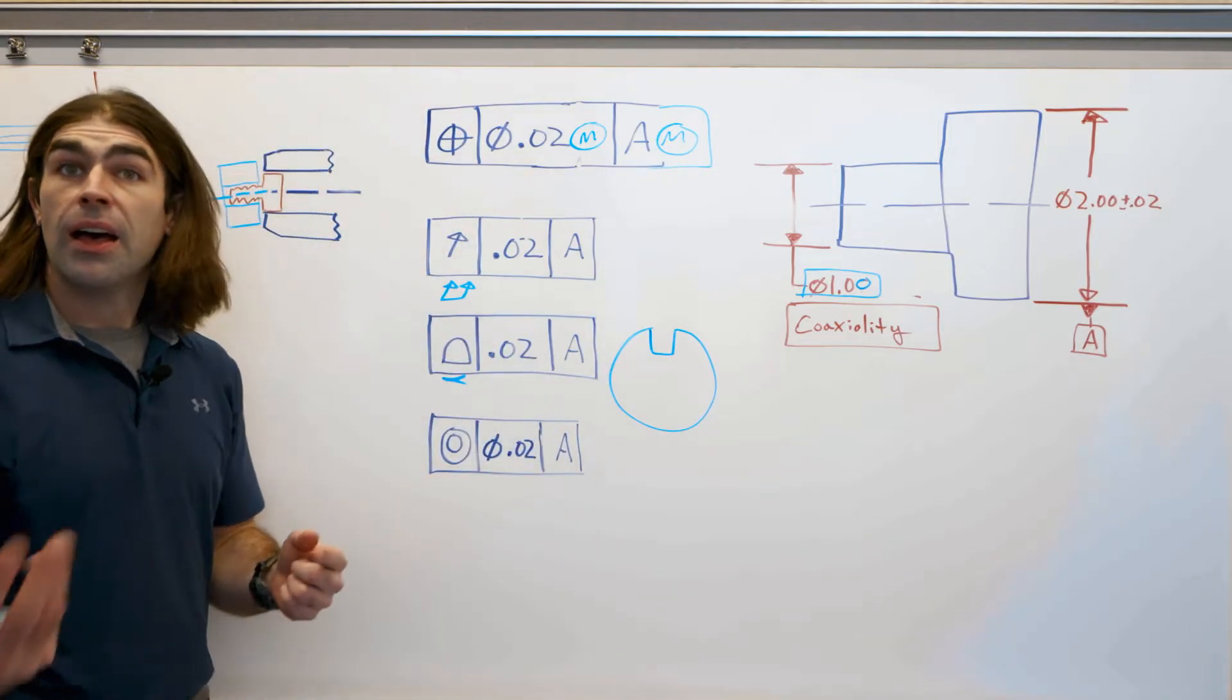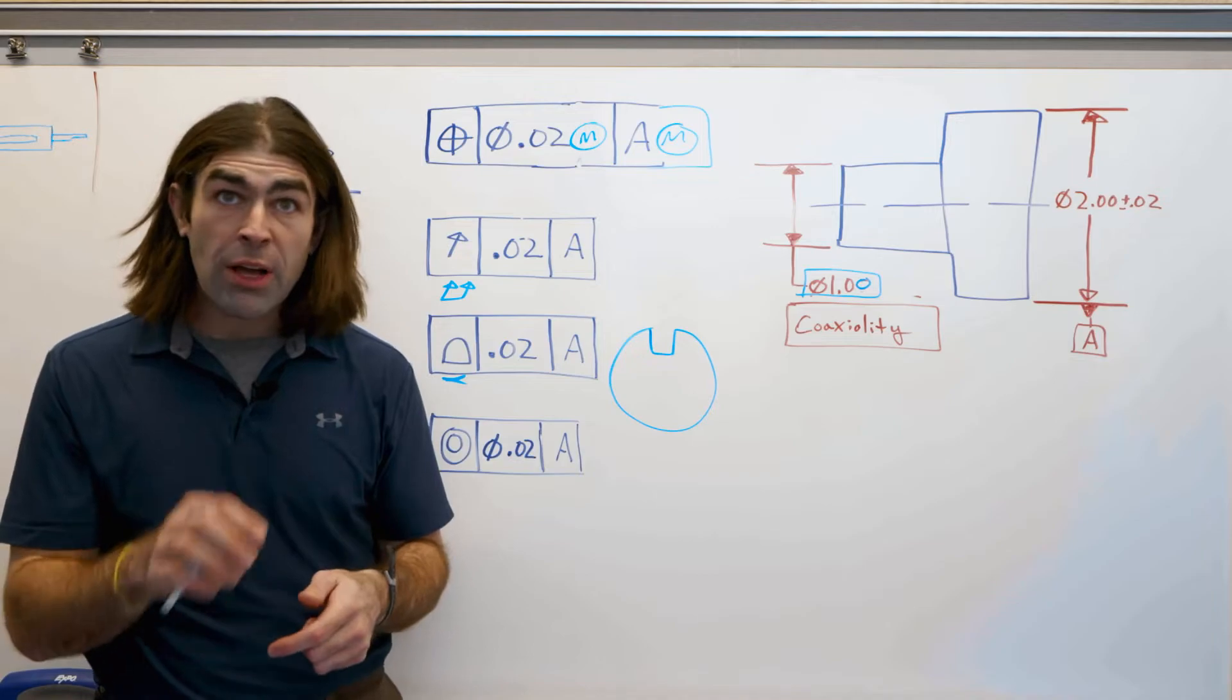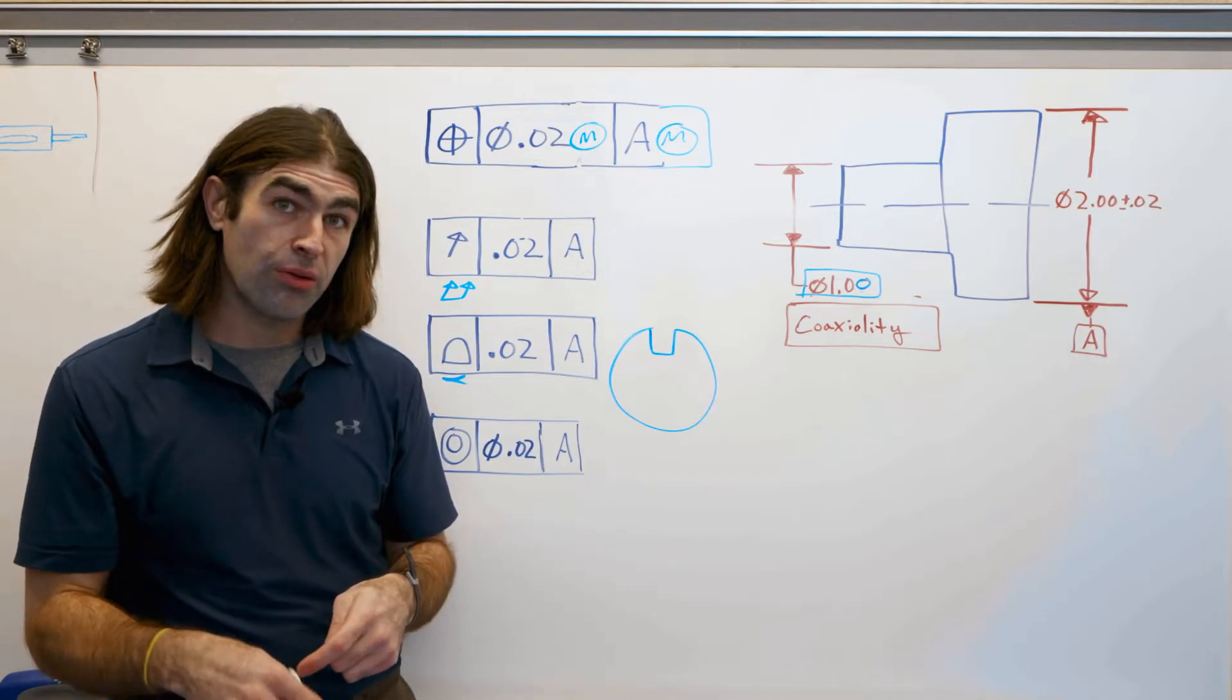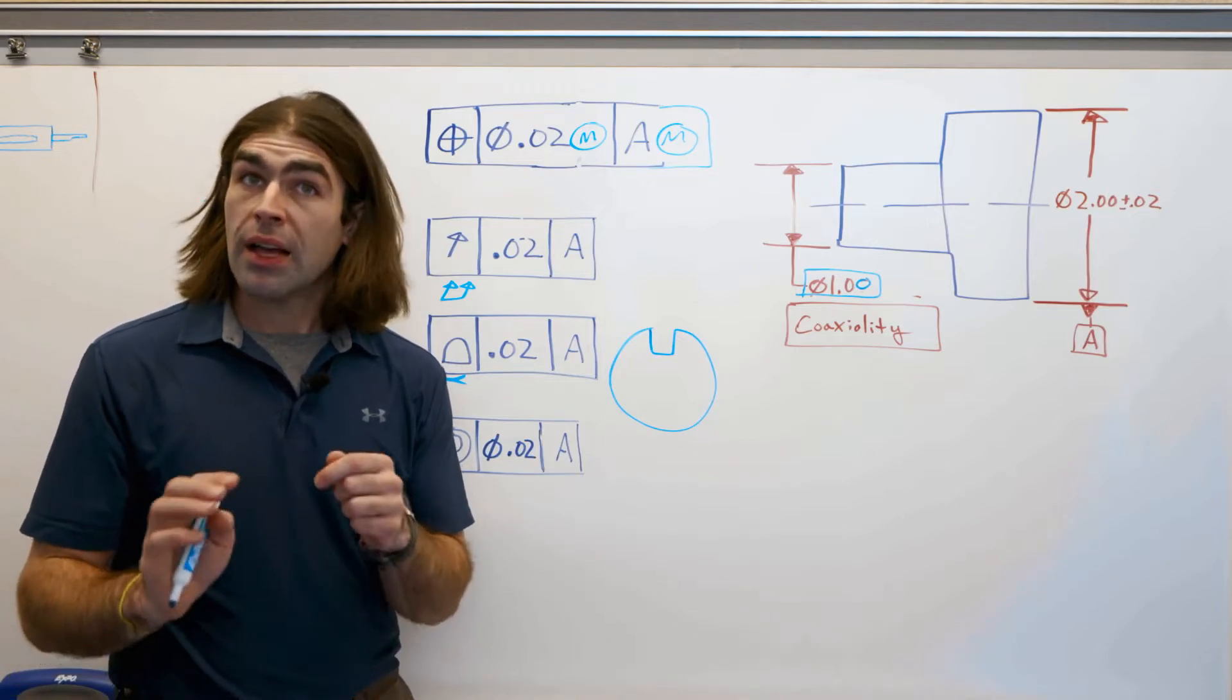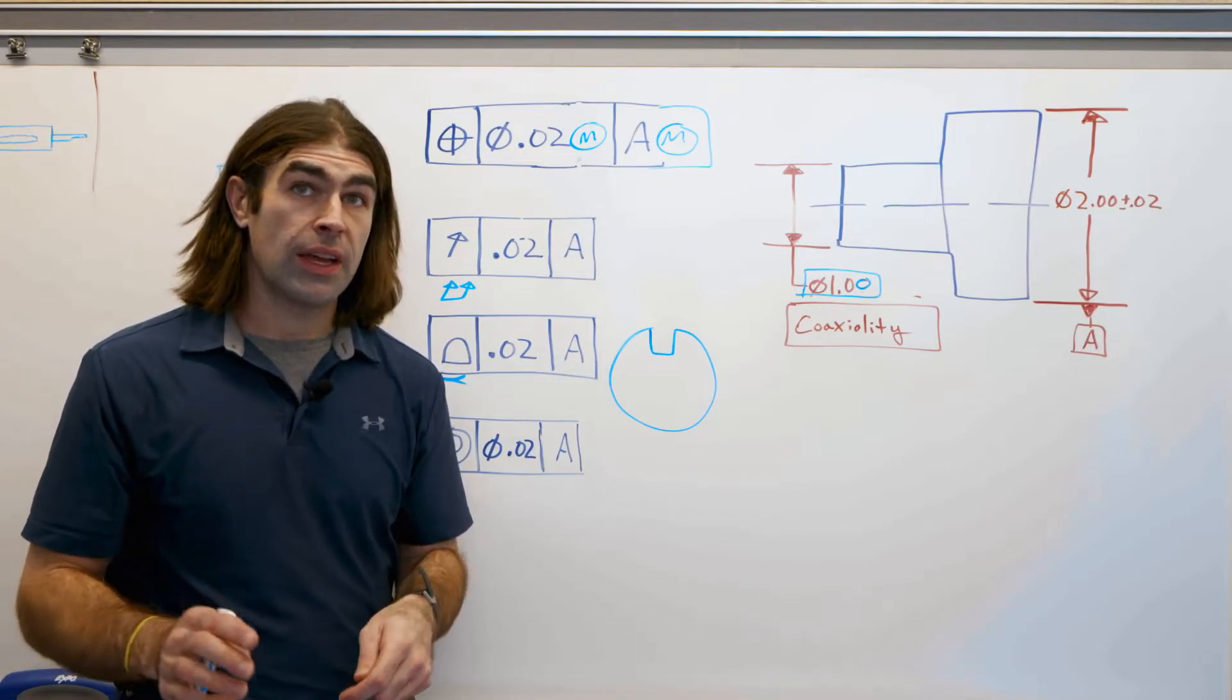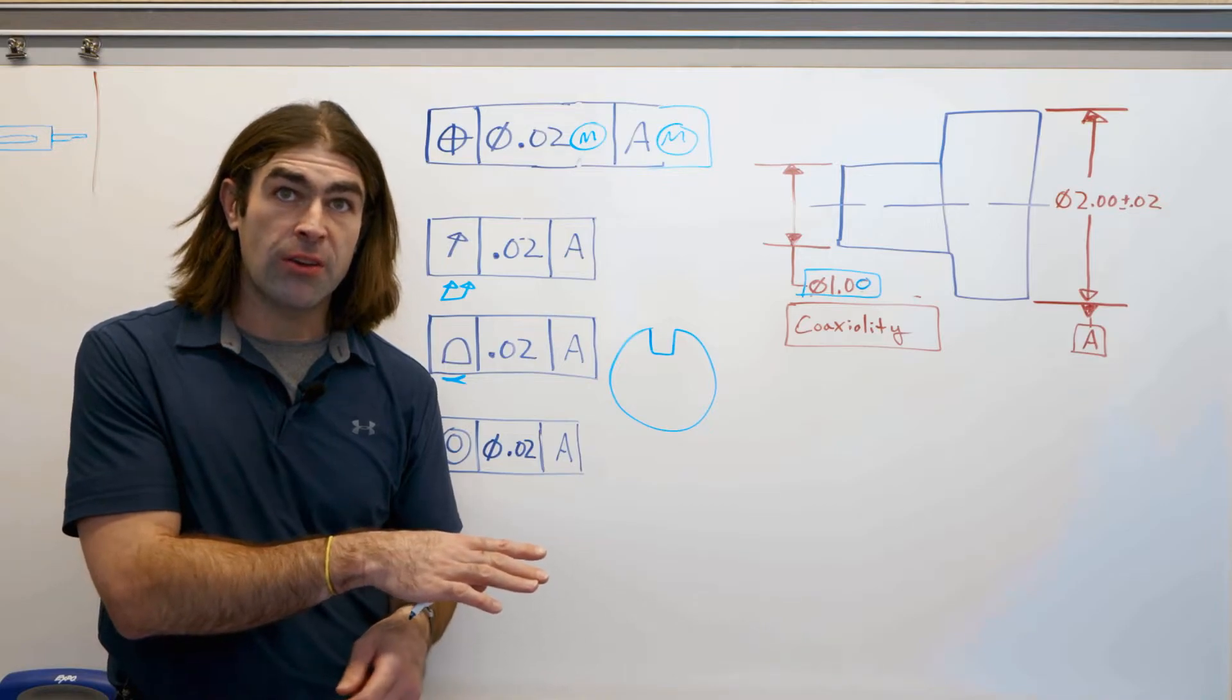The last is concentricity. Now concentricity has been discontinued for the 2018 standard, but it's still on a lot of drawings. Concentricity is a totally different thing than any of the tolerances I've talked about here.